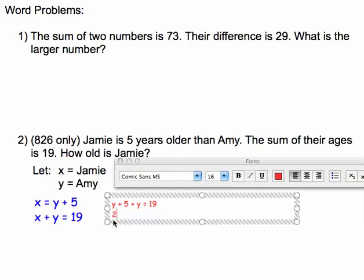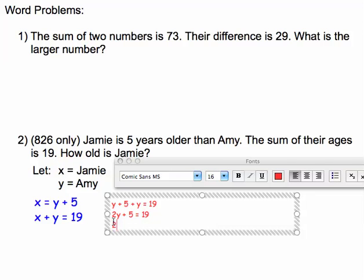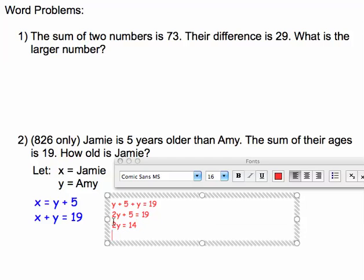Simplify. I get 2y plus five equals 19, subtract five from both sides, I get 2y equals 14, and divide both sides by two, I get y equals seven.